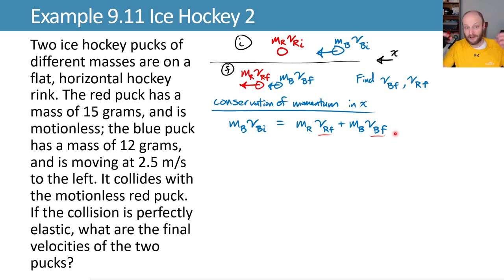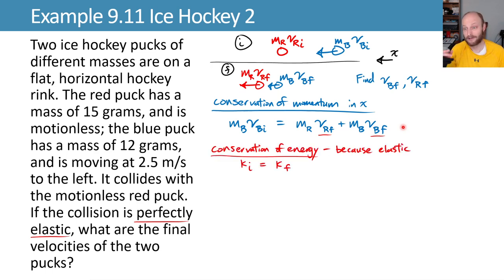We can do this because we've taken our system as both pucks together, so the interaction between them when they bang on each other is internal to our system. It's not an external force acting from outside our system. And we have two unknowns. We can't solve for two unknowns with just one equation. We need a second equation. Luckily we know that this is a perfectly elastic collision, which means that we can write a conservation of energy statement.